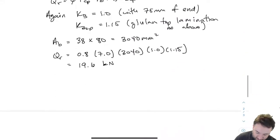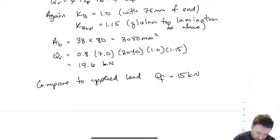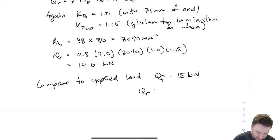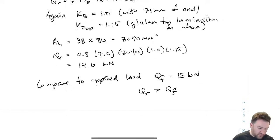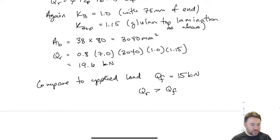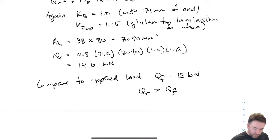Substituting into the equation, I get QR equals 19.6 kilonewtons — quite a bit less than the 41.2 for the steel column because the bearing surface is now smaller (38 by 80 instead of 80 by 80). Comparing to the applied load of QF equals 15 kilonewtons from that joist, QR is still greater than QF, so we do not have a problem.